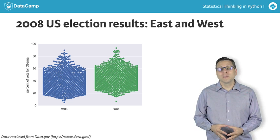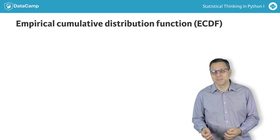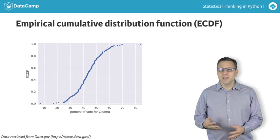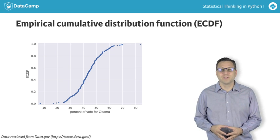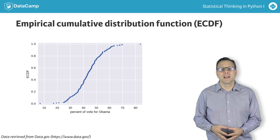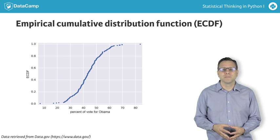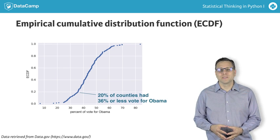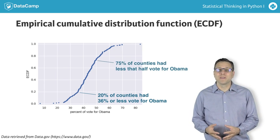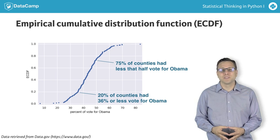As an alternative, we can compute an empirical cumulative distribution function, or ECDF. This is best explained by example. Here is a picture of an ECDF of the percentage of swing state votes that went to Obama. The X value of an ECDF is the quantity you are measuring — in this case, the percent of vote that went to Obama. The Y value is the fraction of data points that have a value smaller than the corresponding X value. For example, 20% of counties in swing states had 36% or less of its people vote for Obama. Similarly, 75% of counties in swing states had 50% or less of its people vote for Obama.